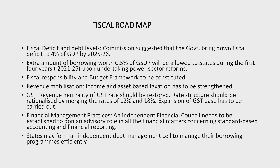Extra borrowing worth 0.5% of GDP will be allowed to states during the first 4 years upon undertaking power sector reforms, including reduction in operational losses, reduction in revenue gap, reduction in payment of cash subsidy by adopting direct benefit transfer, and reduction in tariff subsidy as a percentage of revenue. The Commission recommended forming a high-powered intergovernmental group to review the Fiscal Responsibility and Budget Management Act, and also recommended a new FRBM framework for the centre as well as states to oversee its implementation.